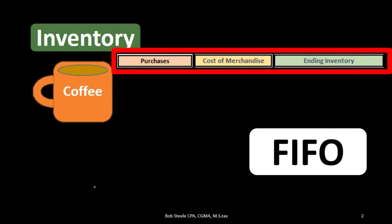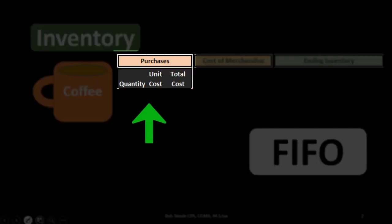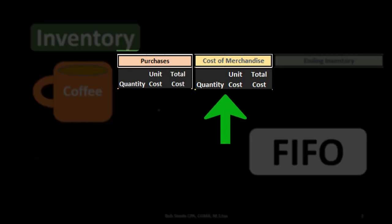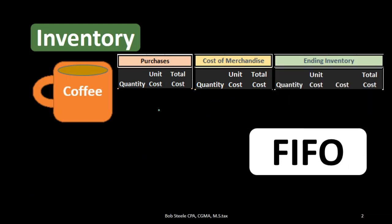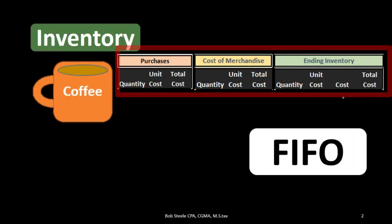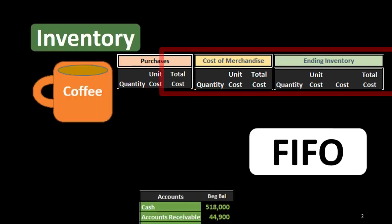Within those sections we will have the quantity, the unit cost, and the total cost. If we sell something and we're calculating the cost of that sale, we track the same things: quantity, unit cost, and total cost. For ending inventory, we record what is left with quantity, unit cost, and then two cost totals — one per layer and one total — because there are going to be different layers.